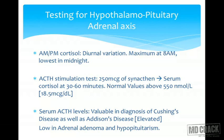In the ACTH stimulation test, when we need to test for cortisol production by the adrenal, we give a synthetic ACTH also called synactin and observe the adrenal response at 30 or 60 minutes. Normal values are above 550 nanomoles per liter or 18.5 micrograms per dL. Serum ACTH levels are valuable in the diagnosis of both Cushing's and Addison's. Low ACTH levels are seen in adrenal adenomas and hypopituitarism.